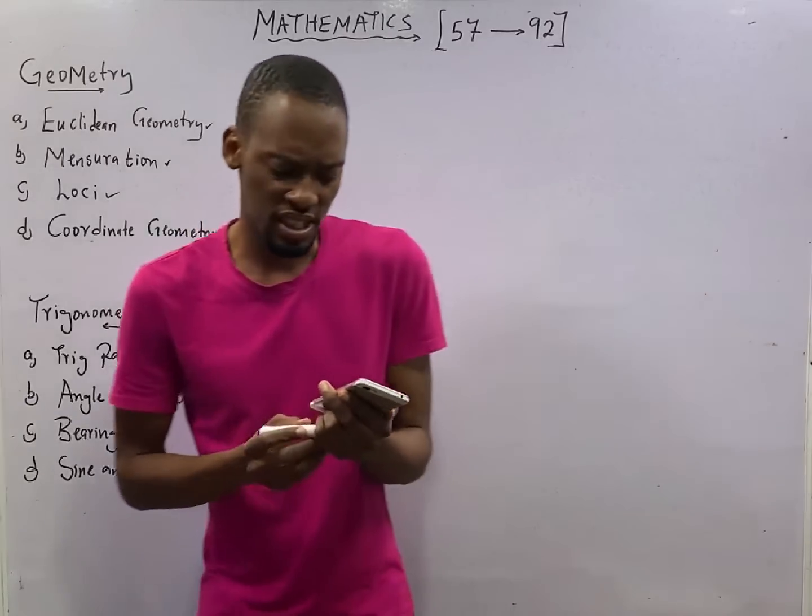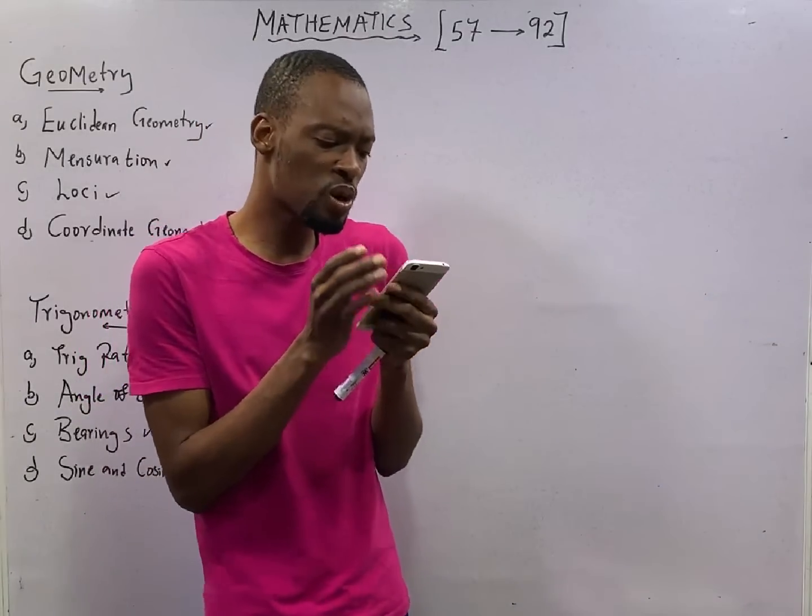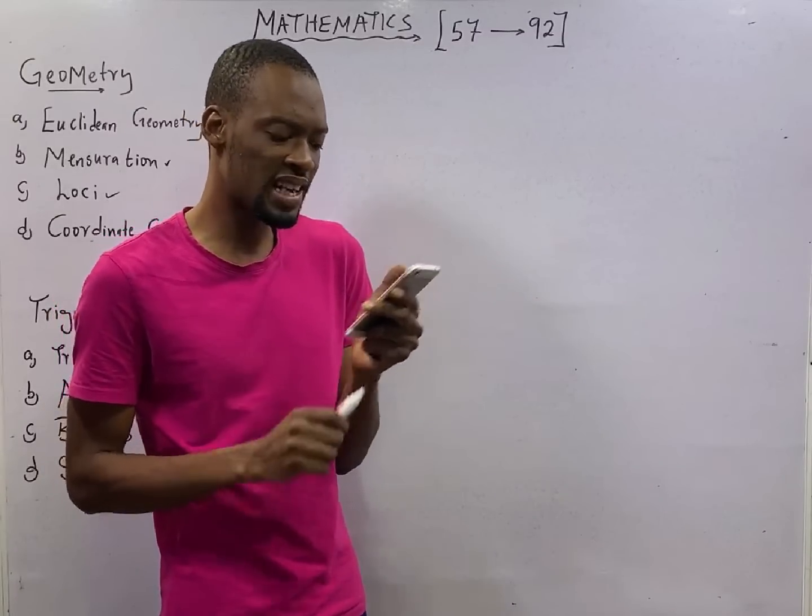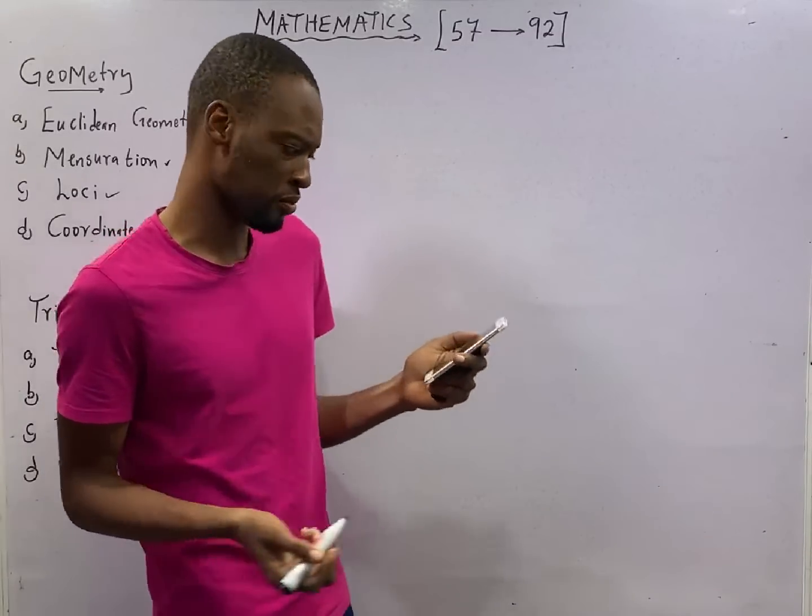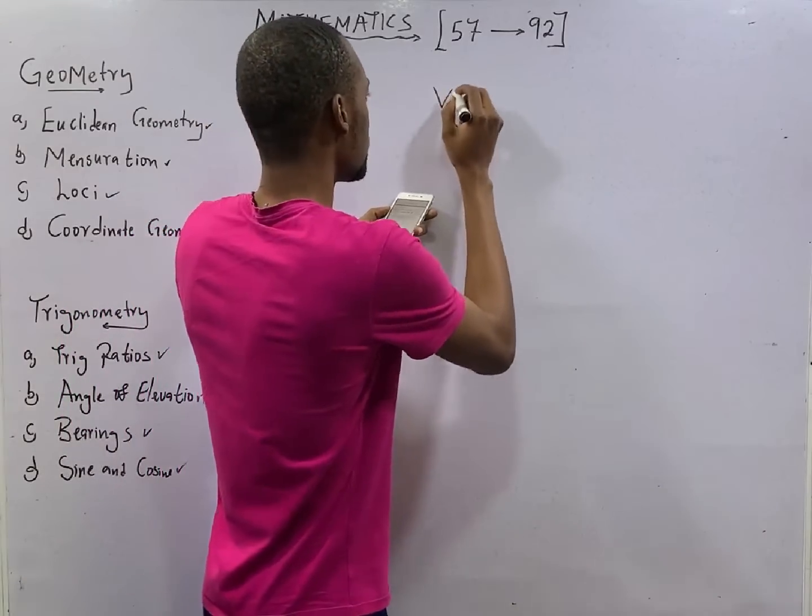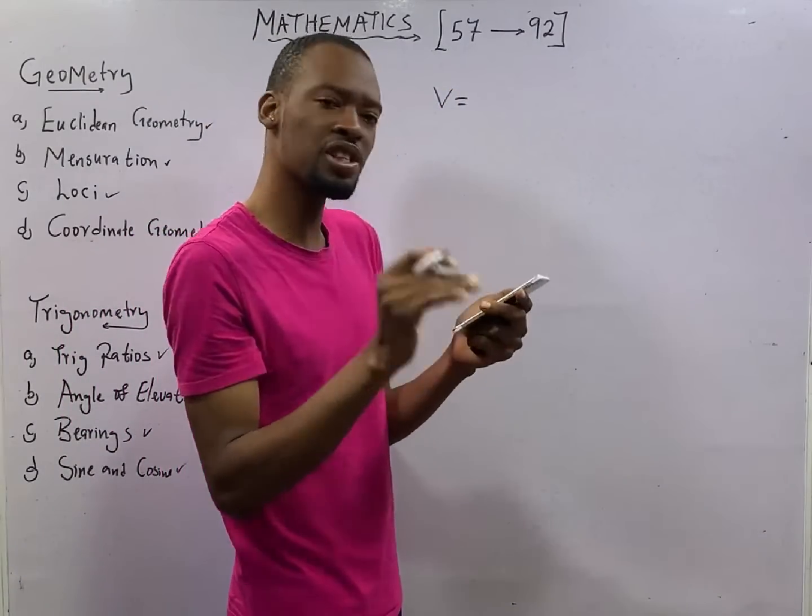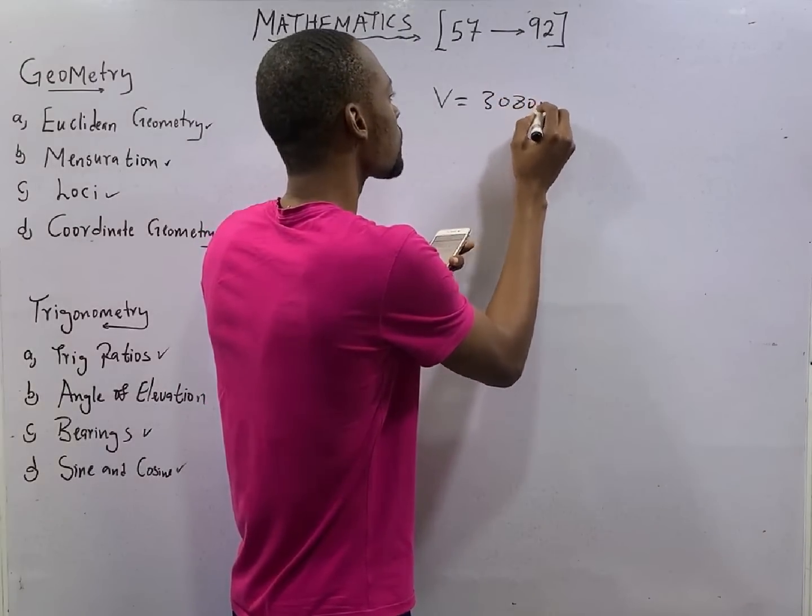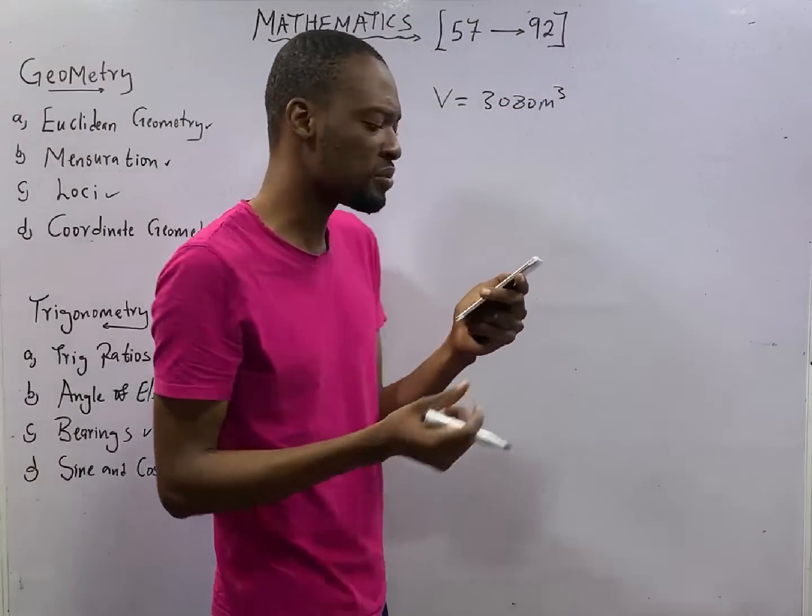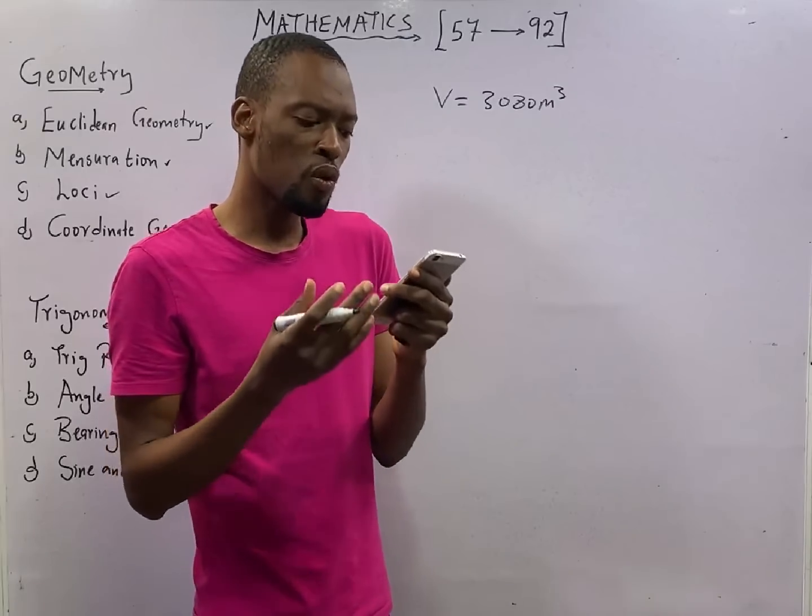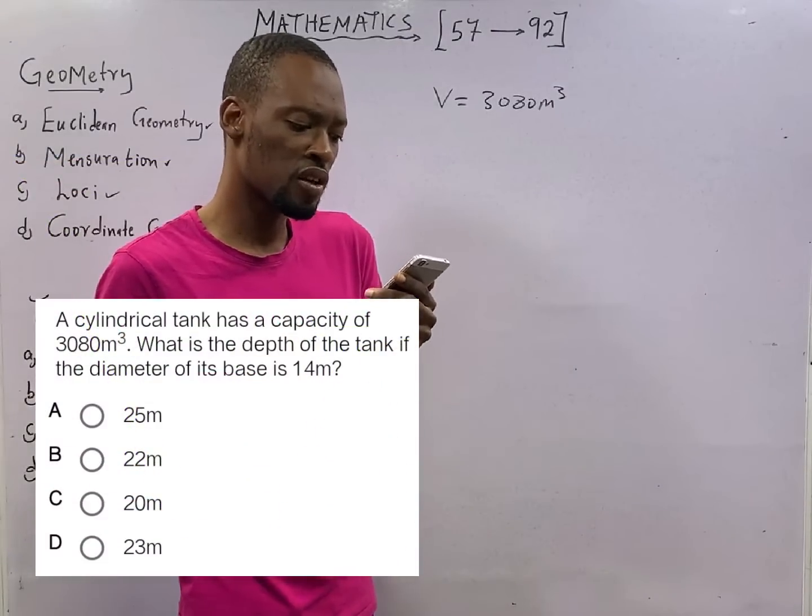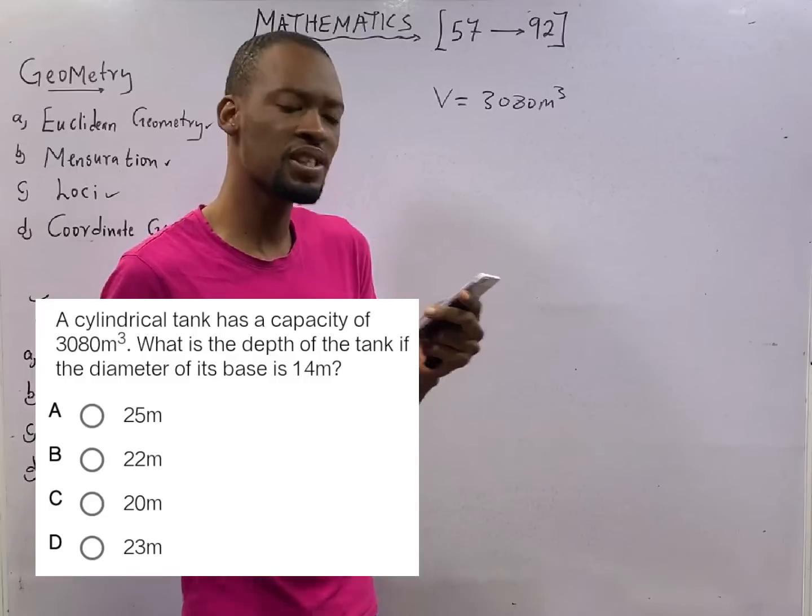The first question we have here is: a cylindrical tank has a capacity of 3080 meter cube. Capacity with the formula unit is meter cube. That is obviously the volume. Volume is meter cube. What is the depth of the tank if the diameter of its base is 14 meters?